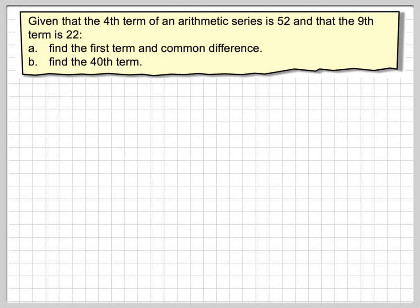This is a typical sort of problem. All we know is that the 4th term is 52 and the 9th term is 22. Therefore, we don't know the first term or the common difference, and therefore we need to do that first before we can find the 40th term.